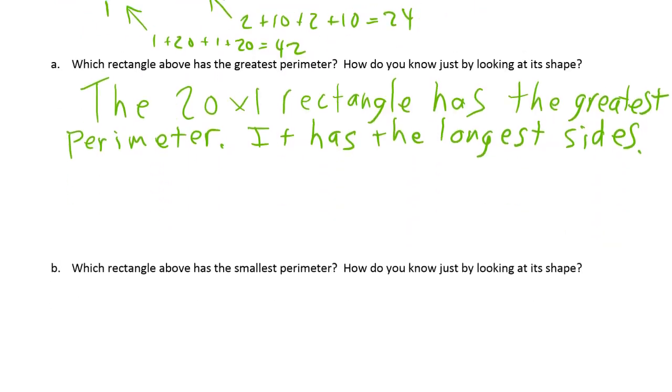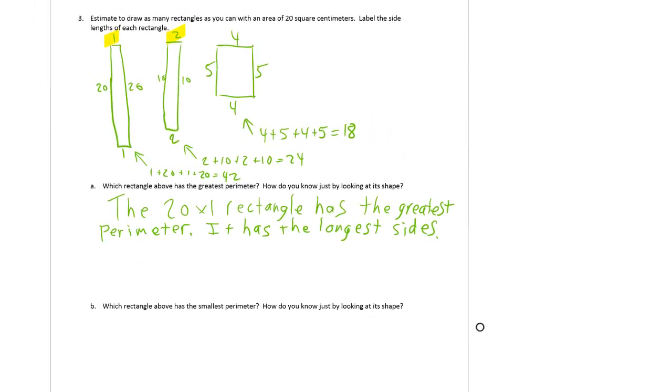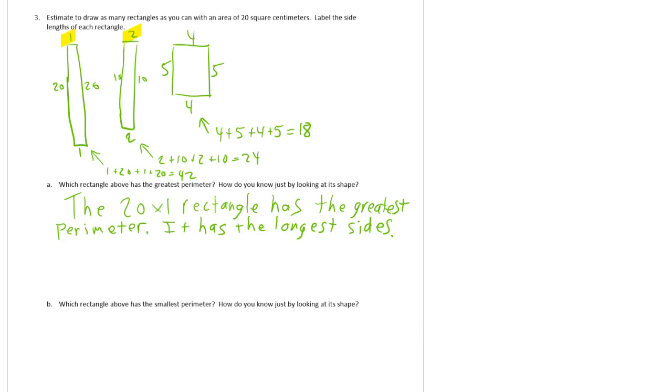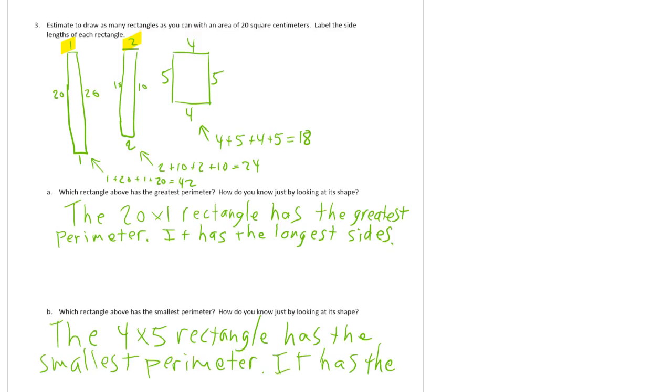Which one has the smallest perimeter? How do you know just by looking at its shape? Well, I think kind of the same thing. It has the shorter sides, right? So the 4 by 5, or you can write 5 by 4. And it's going to be very similar reasoning. Except this one, it has the shortest sides. I know that this side 4 is longer than the 2, and it's certainly more than the 1.